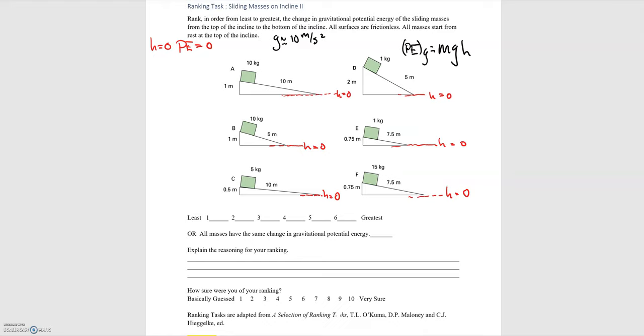For the first one we have a mass of 10 kilograms, so we have 10 times 10 for the acceleration due to gravity times a height of 1 meter for the block.